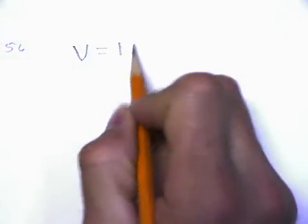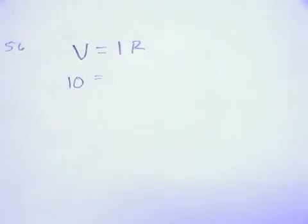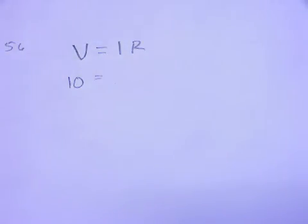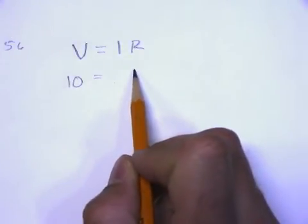So if you've got this equation, and they say the voltage is kept constant, so let's just make it a number 10, and the resistance is doubled. So let's say that this resistance was originally, let's see, 2.